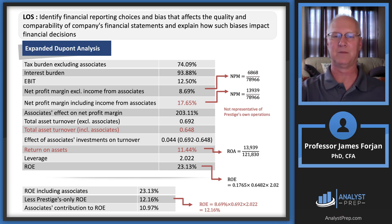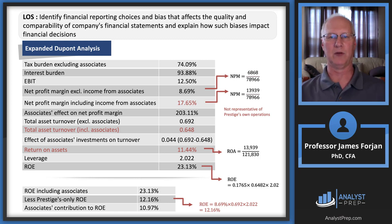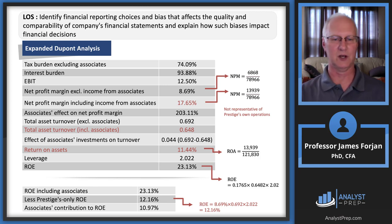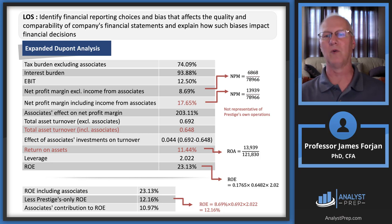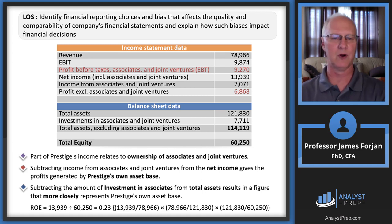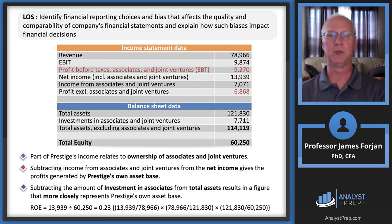We did all those math operations so that we could do this middle calculation. Prestige's only return on equity: we take that 8.69%, multiply by the asset turnover of 0.692, then multiply by the leverage of 2.02, and that gets us 12.16%. The associates contribute about 11%, and Prestige contributes about 12%, getting us up to our 23%. Saying return on equity is 23% and ending the story there is clearly not a completed analysis.